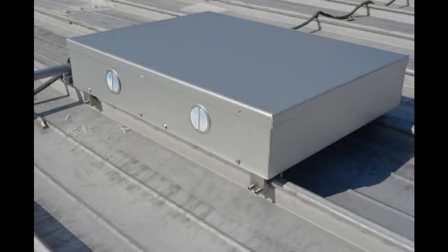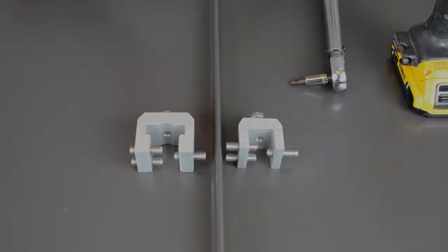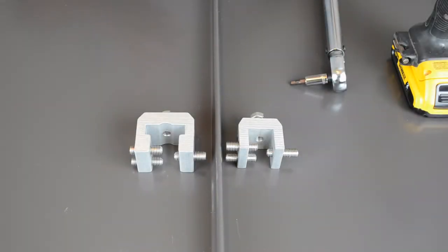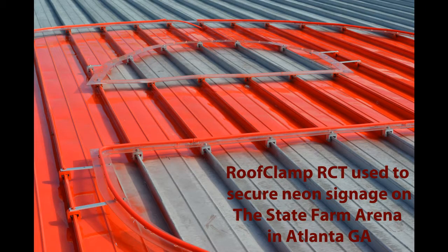These are the perfect solution for mounting just about anything to a standing seam roof without penetrating the panels or voiding warranties. All the clamps are backed by a lifetime replacement warranty. These are commonly used to mount solar panels, walkways, satellite dishes, snow bar systems, signage, etc.